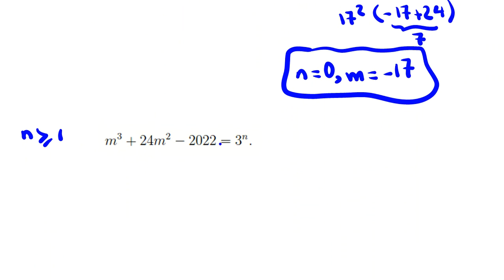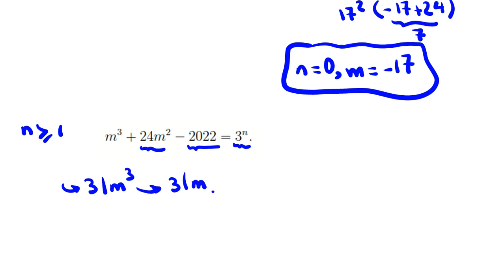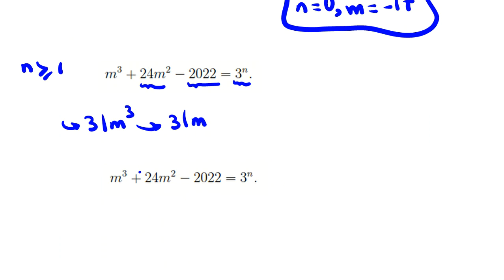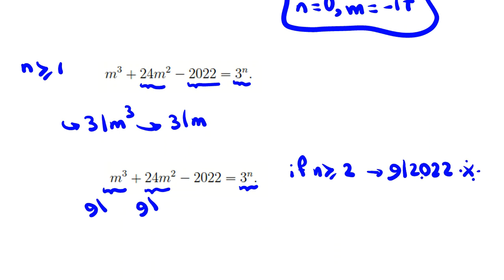Because n ≥ 1, the right side is a multiple of 3. So 3 divides the left side, and taking the other terms to the right we conclude 3 divides m³, hence 3 divides m. If n ≥ 2, the right side is a multiple of 9. Since m is a multiple of 3, the term m³ is a multiple of 27 and 24m² is a multiple of 9, so 9 must divide 2022. But the digit sum of 2022 is 6, which is not a multiple of 9 — contradiction.